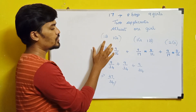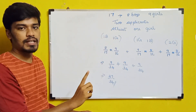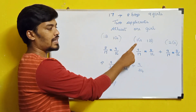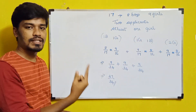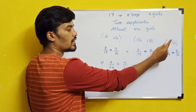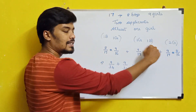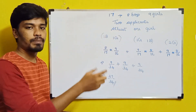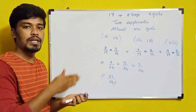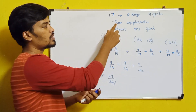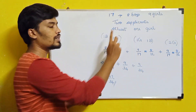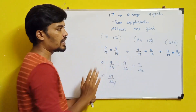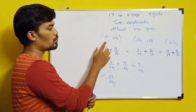The three events are: first, the first selected is a boy and the second is a girl; second, the first selected is a girl and the second is a boy; third, both the first and second selected are girls. This covers 'at least one girl' — meaning minimum one and maximum two girls out of the two selected applicants.